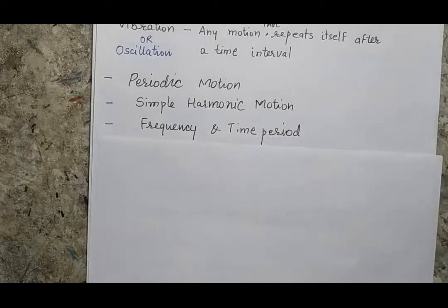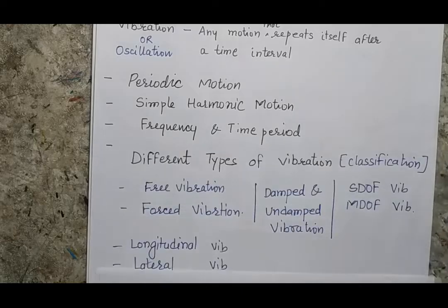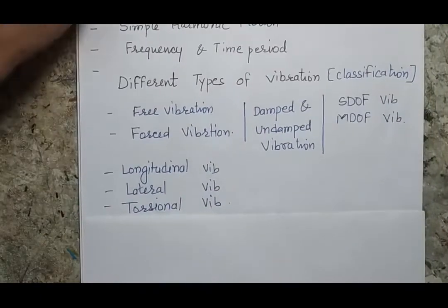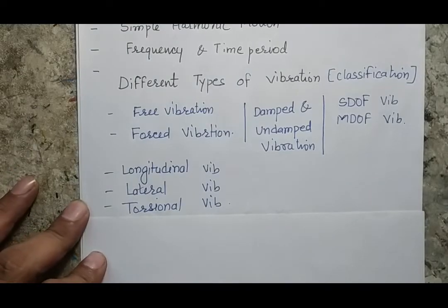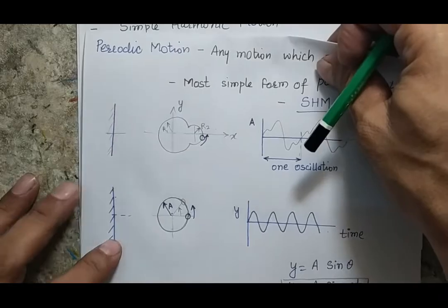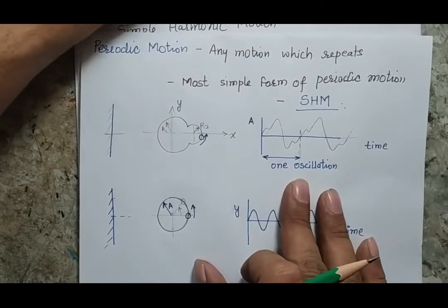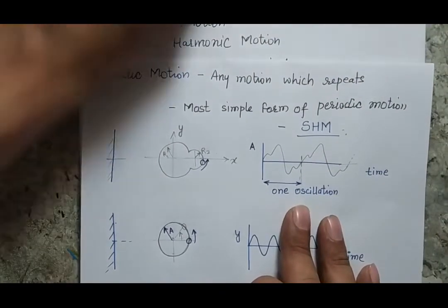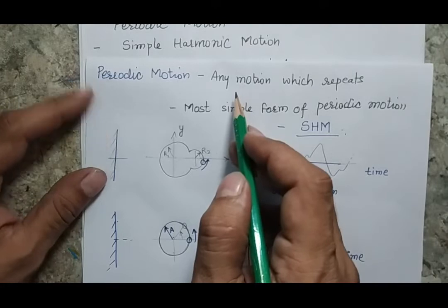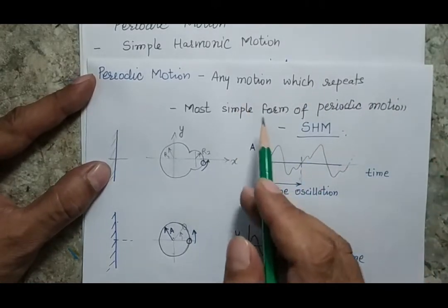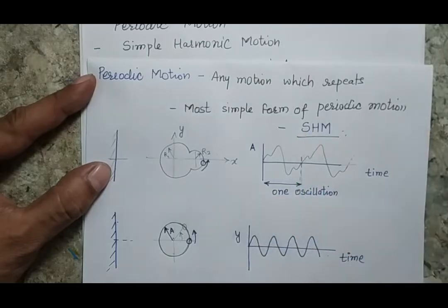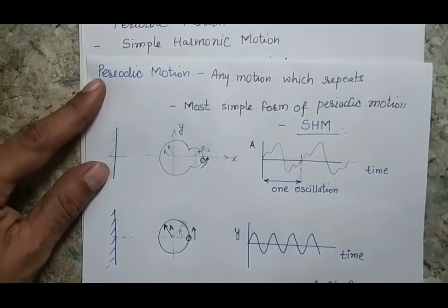We will also talk about the frequency and time period of a motion and finally classify different types of vibration by taking a simple example. Any motion which repeats itself is a periodic motion, but simple harmonic motion is a special case of periodic motion.